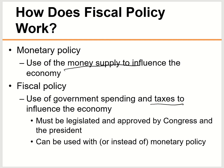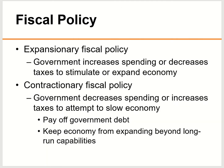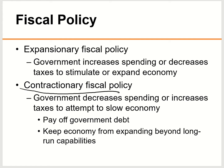For fiscal policy, there are two types: expansionary fiscal policy and contractionary fiscal policy. Expansionary fiscal policy — the goal is to stimulate the economy, make the economy better. Contractionary means to try to slow it down, because we don't want the economy to go all over the place. We want to slow it down using contractionary fiscal policy.